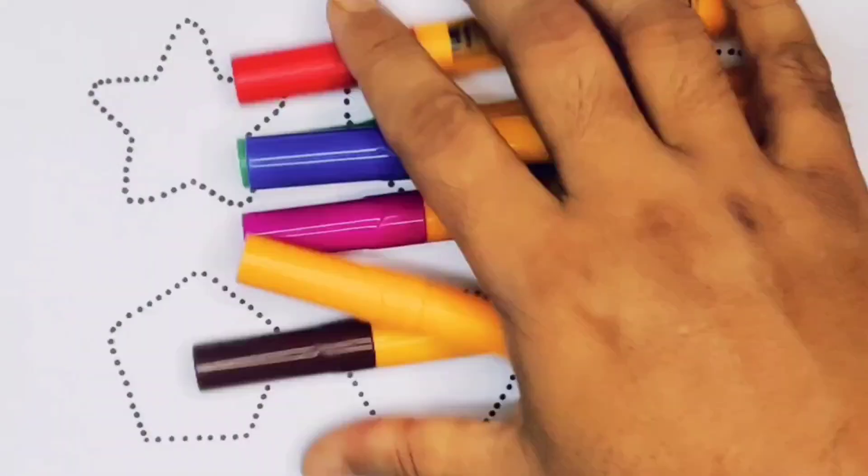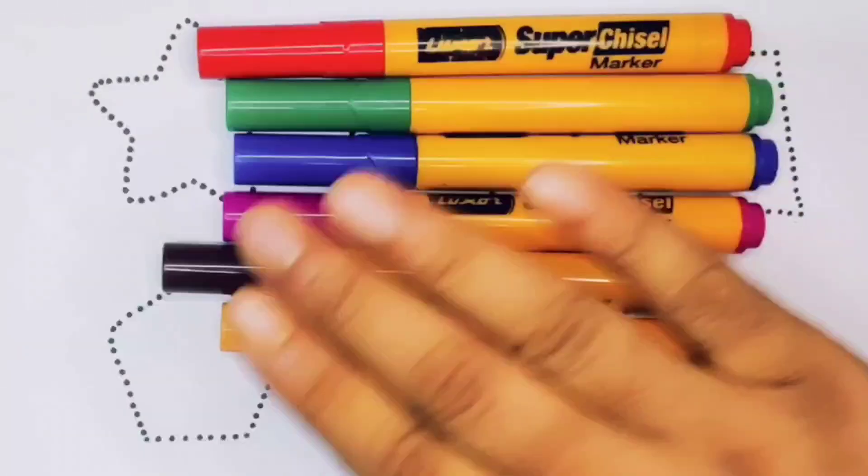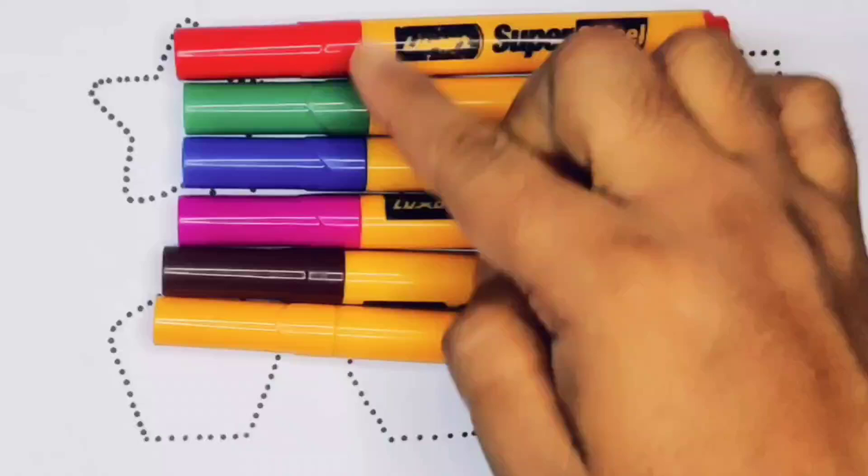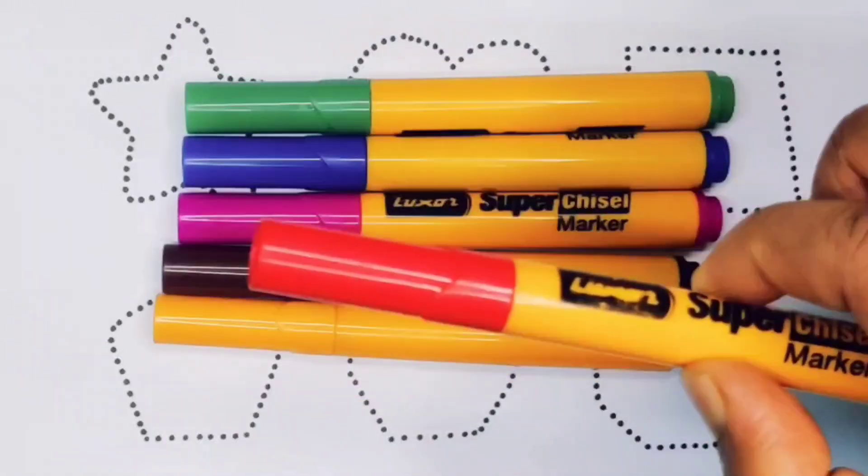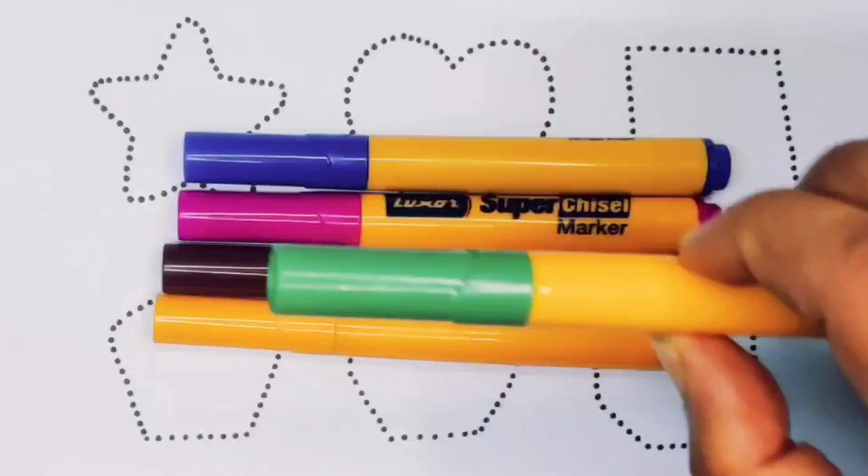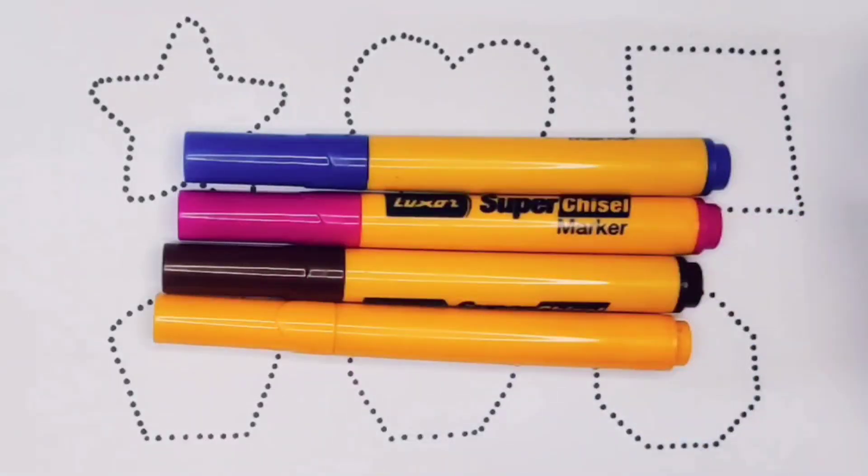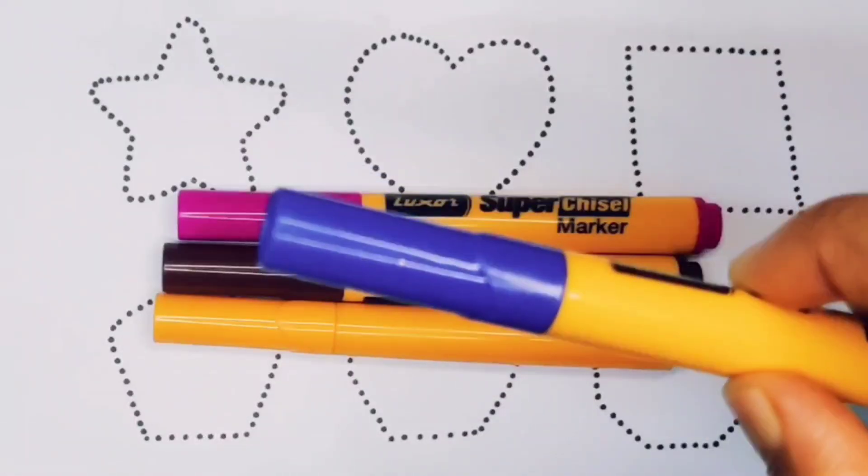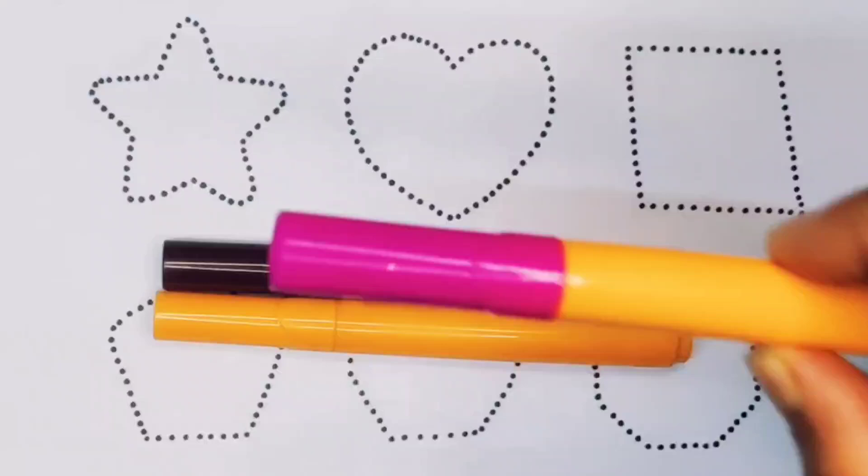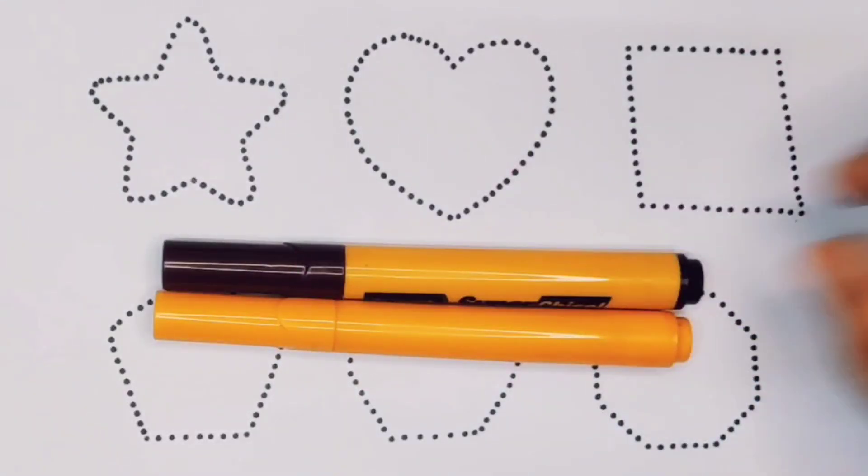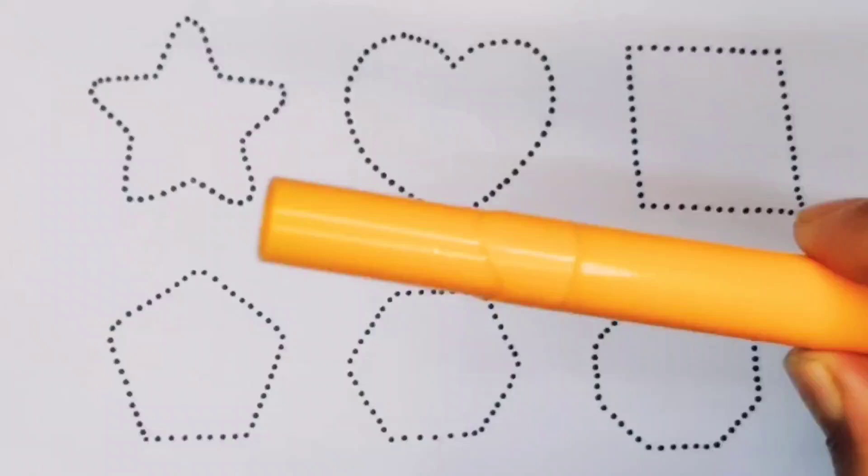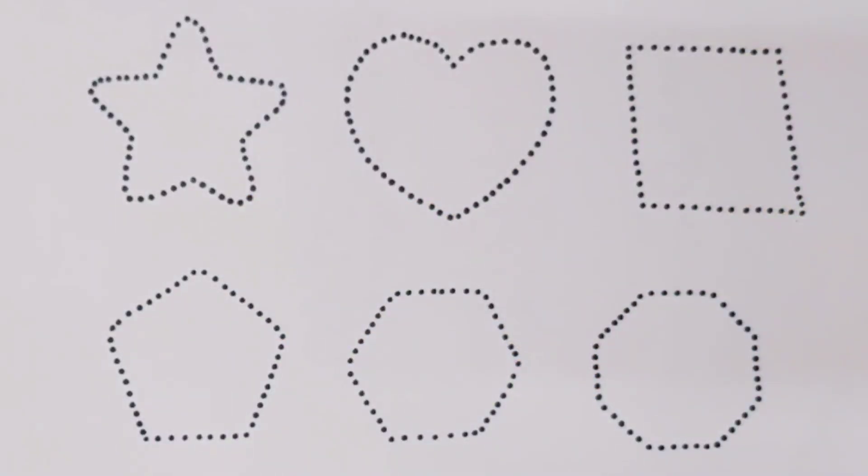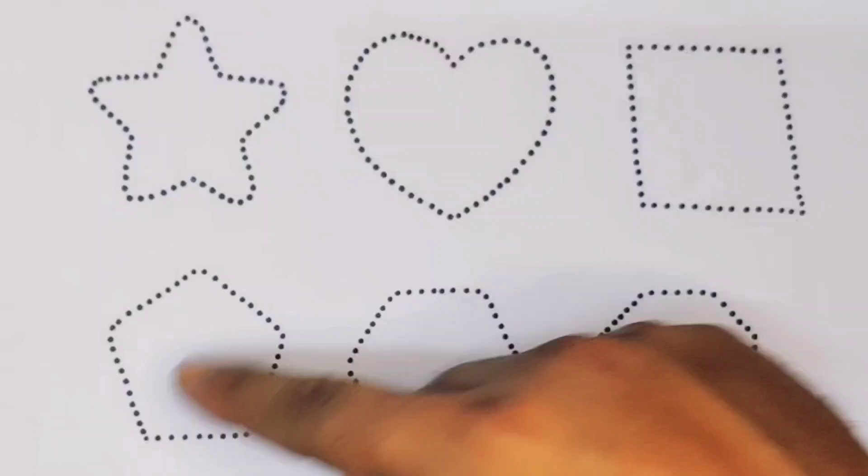Hello kids, welcome to my new video. First you're going to know the colors name: red color, light green color, blue color, pink color, chocolate color, orange color, and black color. Now let's learn the 2D shapes.